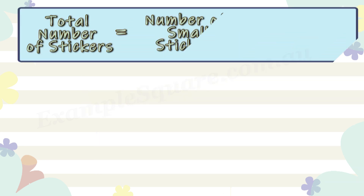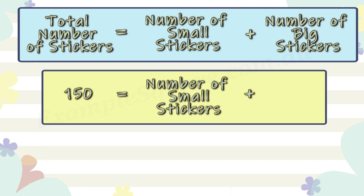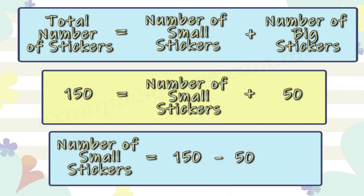The number of small stickers can also be calculated as the total number of stickers minus the number of big stickers: 150 minus 50, so the number of small stickers equals 100.